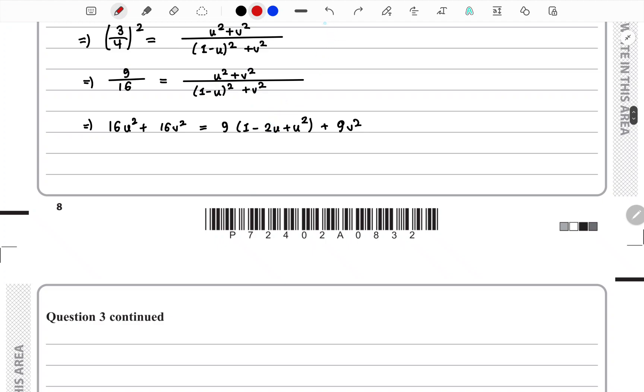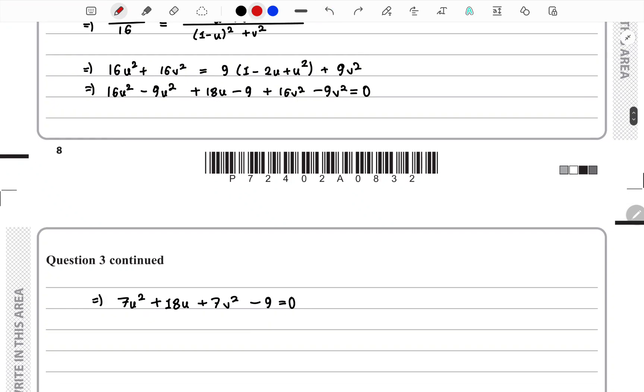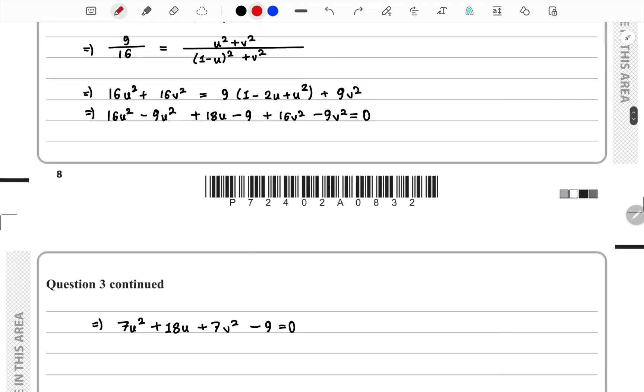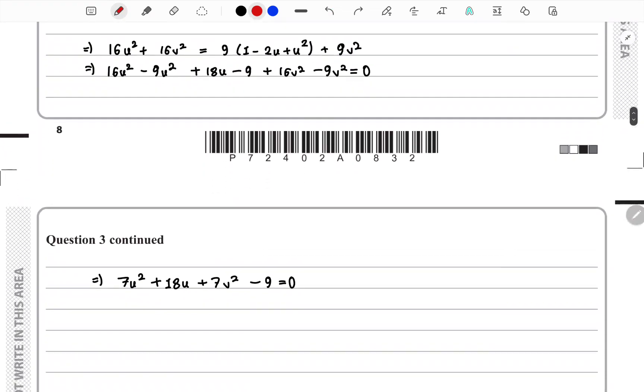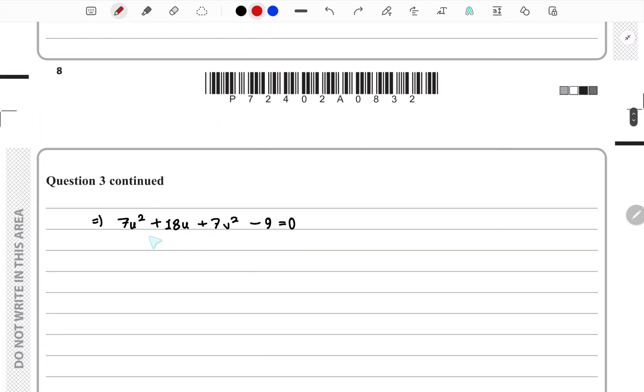We expand the bracket of 1 minus u whole square. Then we change sides and get this equation. From here we have to complete the square for u.